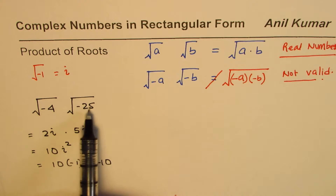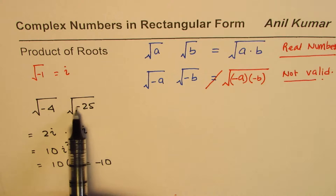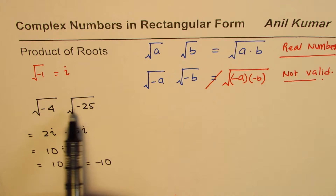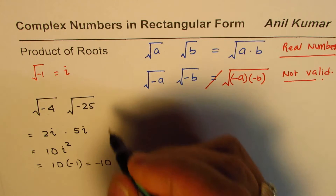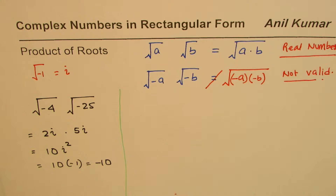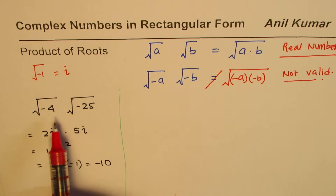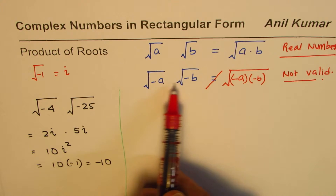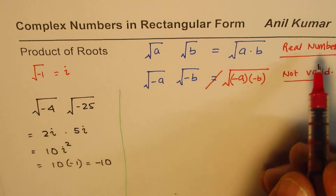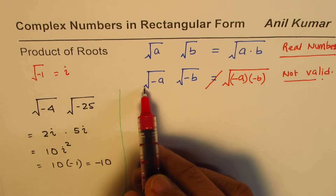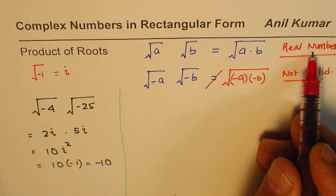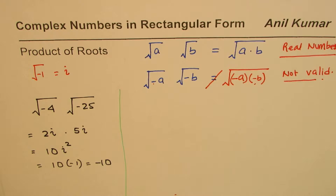Now, if you had incorrectly multiplied the values inside — getting square root of 100 — you would have gotten positive 10, which is the wrong answer. That is a word of caution: we cannot use the product rule inside radicals when dealing with complex numbers. In the real numbers, there is no solution for square root of a negative number, which is why this equation is not valid for real numbers.